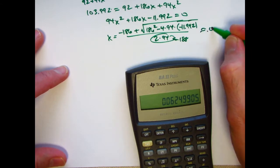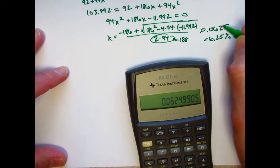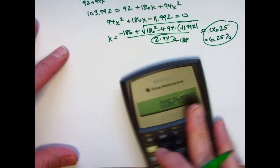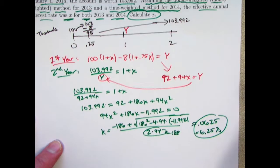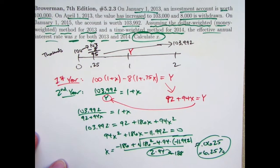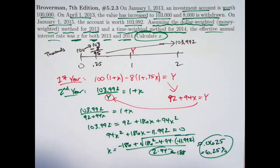Approximately 0.0625. 6.25%. And that is the correct answer for x, it turns out. So again, you can look over this problem and think about it again. Try it on your own. Double check what I've done. This is the correct answer.